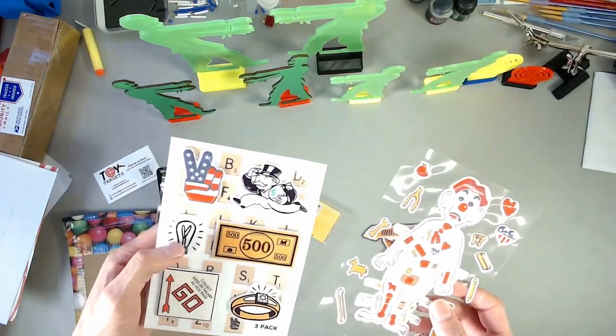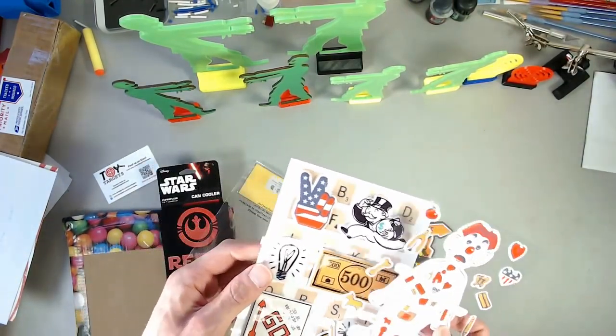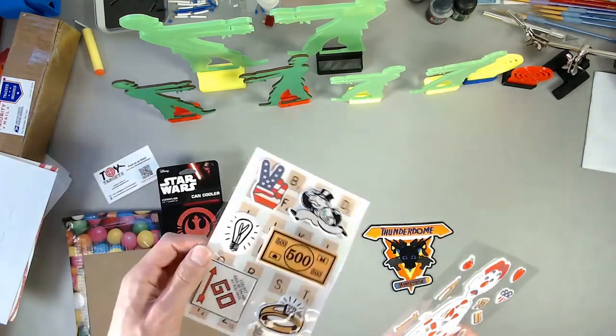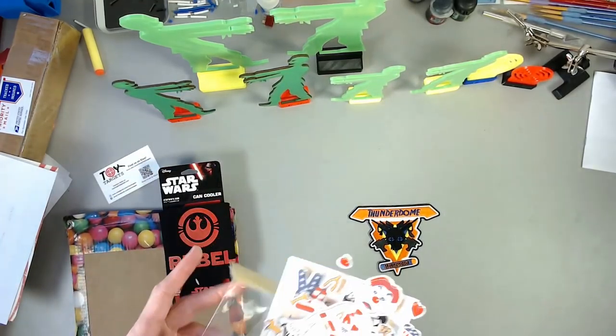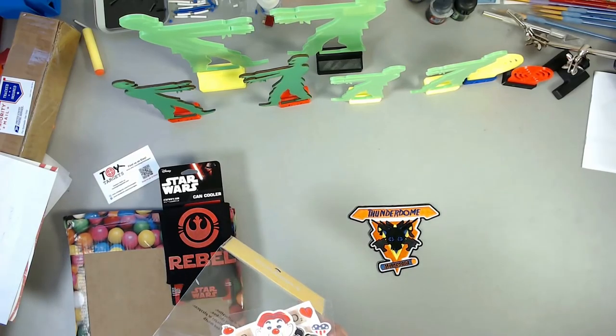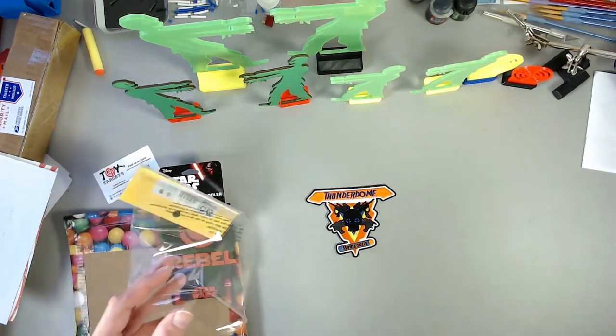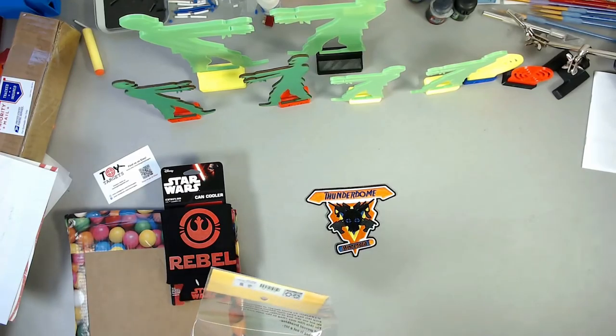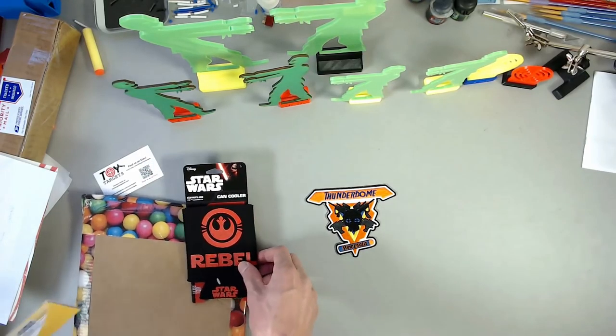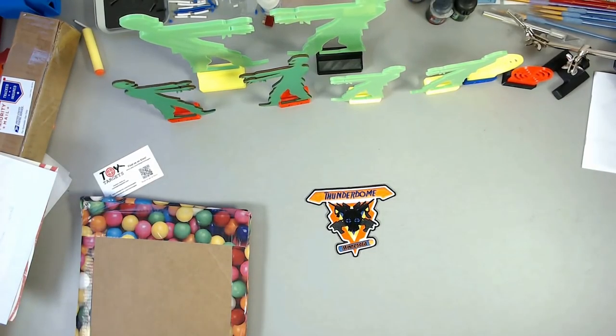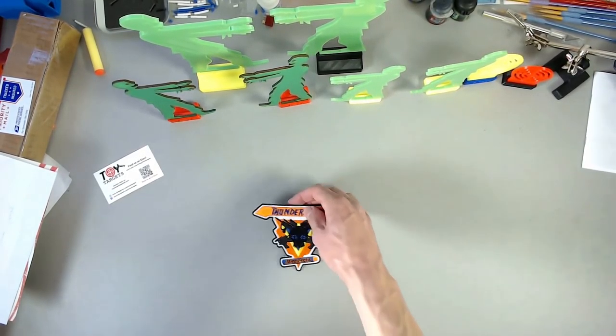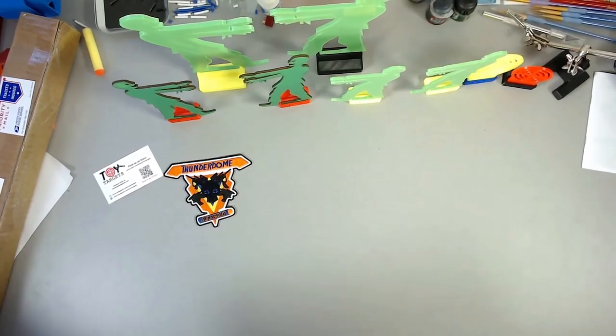And a bunch of stickers for random stuff. We got some operation, some money, some light bulb ideas from Monopoly. All right, we'll have some fun with these stickers. Thank you so much Thunderdome Minnesota. This is absolutely awesome. I love this patch. I'll find some random things to put the stickers on and I'll find some ways to keep my drinks cool with your koozie. Thank you so much.